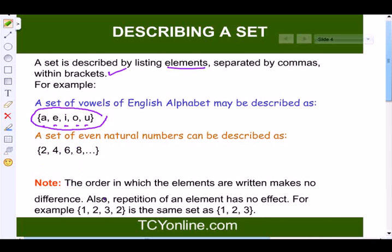Now we have to remember one thing. The order in which the elements are written makes no difference. Also repetition of the elements does not make any effect. For example, if I write down {1, 2, 3, 2}, this is same as set {1, 2, 3}. So that means there is no effect if there is repetition, or the order is also not affected.